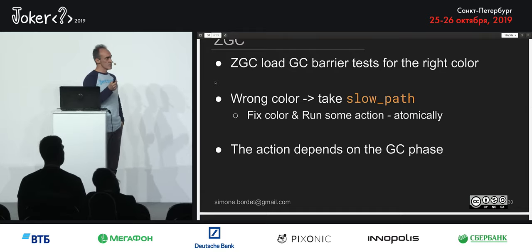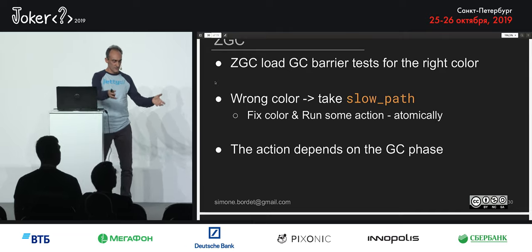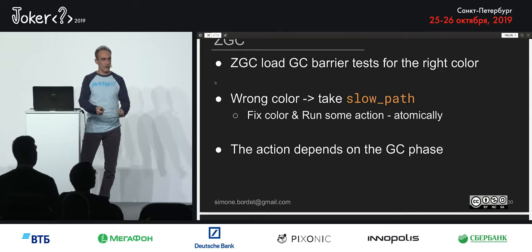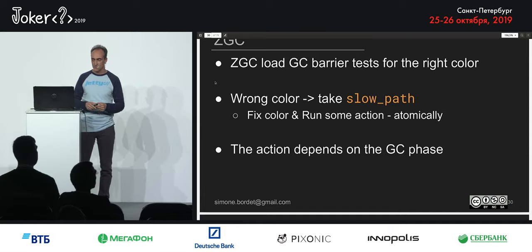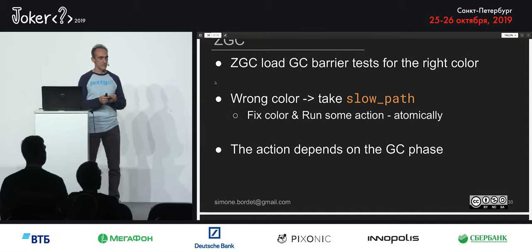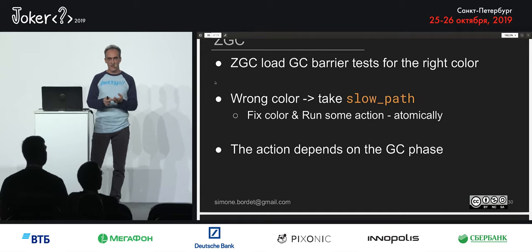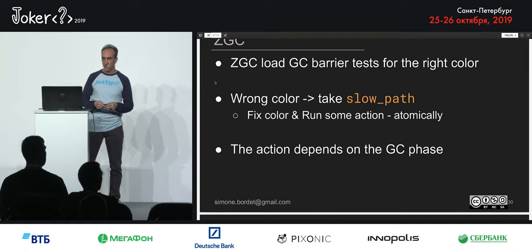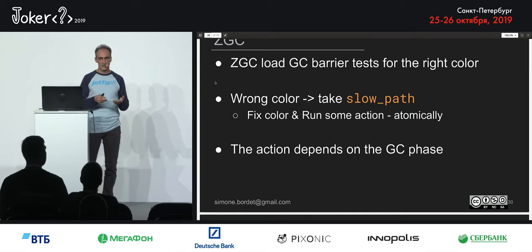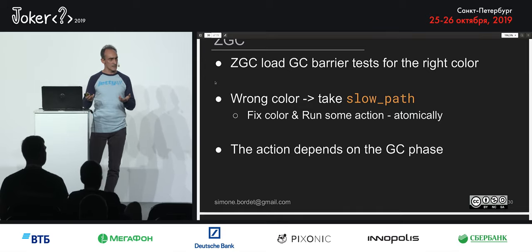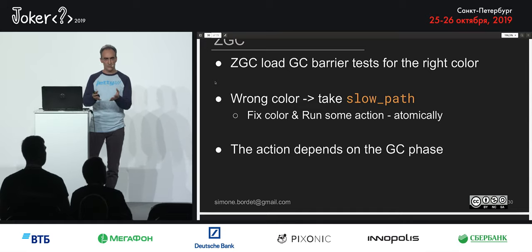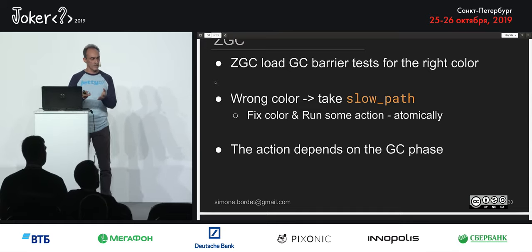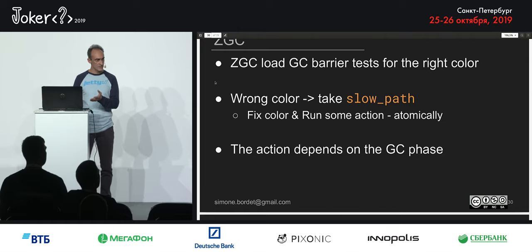The slow path has to do two things: fix the color of the pointer, then take some action atomically — because if it's not atomic, you have a race condition with the application threads. The action depends on the phase of the GC: if marking, take one action; if doing relocation, take a different action.